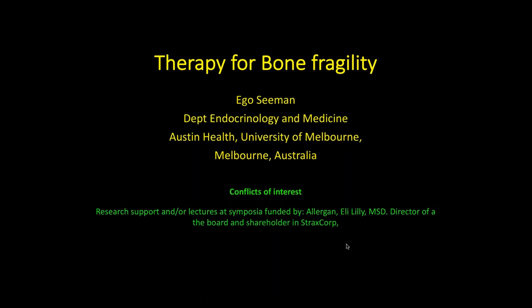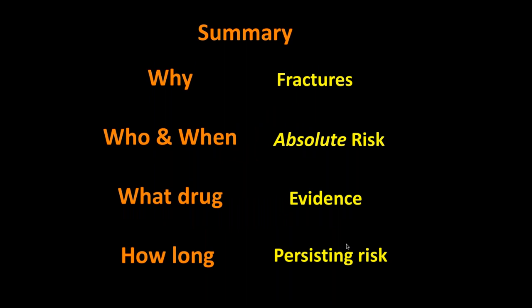Let me summarize some clinical aspects. Why do we treat people? We treat people because they have fractures and fractures hurt. Who and when should we start? That depends on the absolute risk of fracture — we want to target treatment to those who are going to fracture in the next one to three years. It's difficult to determine who will fracture in 10 years' time, so attention is to finding those people at imminent risk for fracture and treating them before the first fracture. We want to prevent all fracture events, the first and all subsequent events.